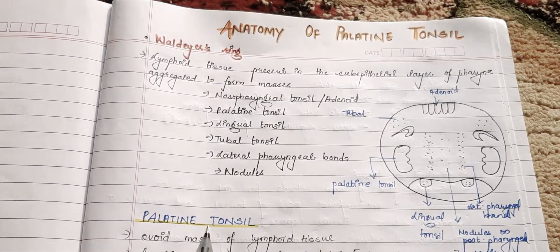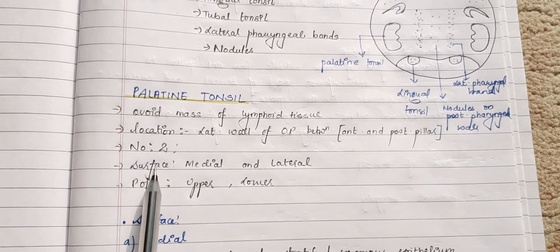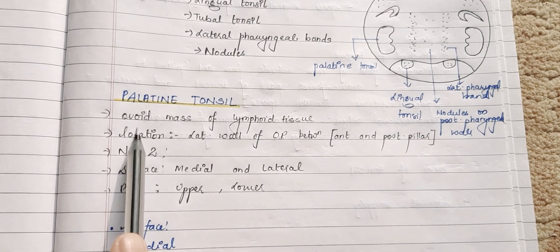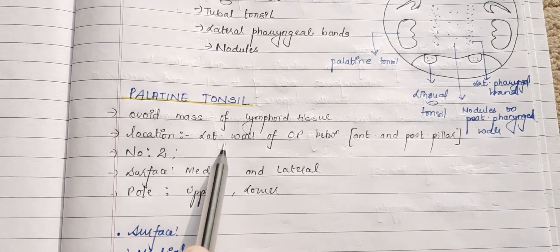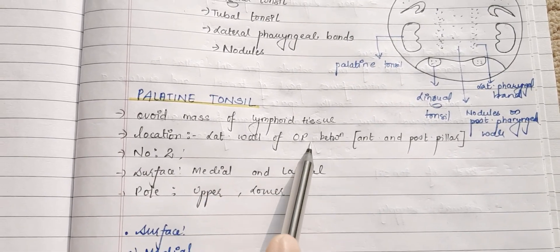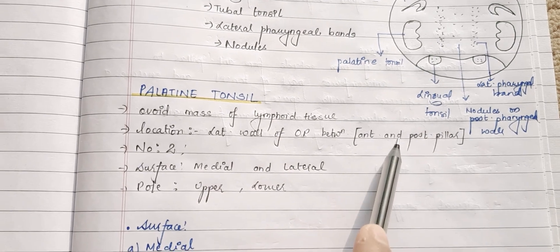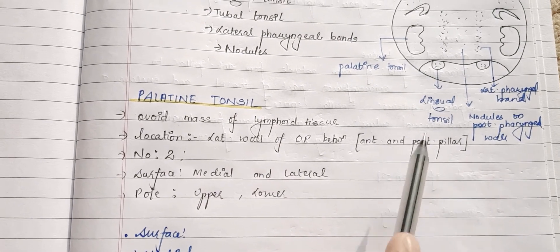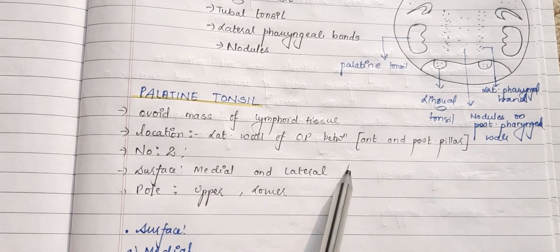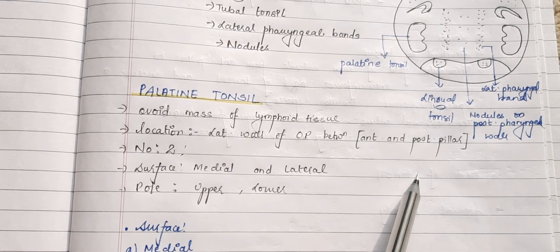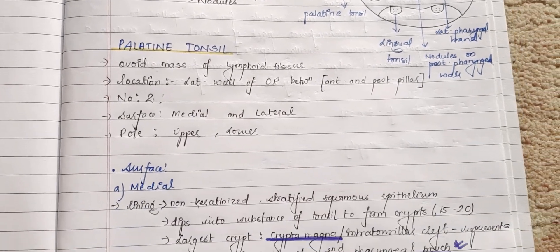The palatine tonsil is also a part of Waldeyer's ring. It is an ovoid mass of lymphoid tissue present in the lateral wall of the oropharynx, situated between the anterior and the posterior pillars. There are two tonsils, one on each side of the lateral wall of the oropharynx.